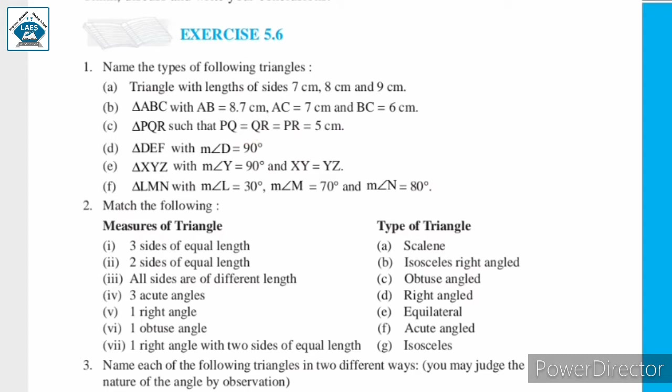Therefore, triangle PQR is an equilateral triangle. Next, triangle DEF with measure of angle D equal to 90 degrees. Since one angle of triangle DEF is a right angle — that is 90 degrees — triangle DEF is a right angled triangle.